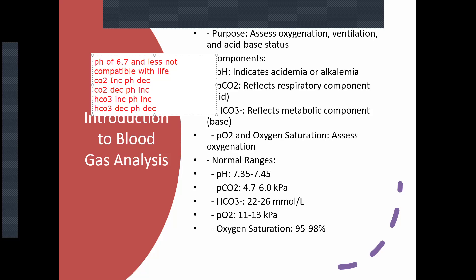Regarding normal values — for those working in the Commonwealth or British system using kilopascals, normal PCO2 is 4.7 to 6, bicarb is 22 to 26, partial pressure of oxygen is 11 to 13, and oxygen saturation is 95 to 98. The US system uses different measurements.